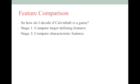How would a new person decide if Calvin Ball is a game? In feature comparison, when you have an existing category and a new thing, you start by comparing the defining features. Does it have rules? Yes. Does it have players? Yes. Does it have an outcome? Yes. If all of stage one is yes, we don't do anything else — we stop. It's kind of like the airport: if you get through the first luggage rack, you're fine.